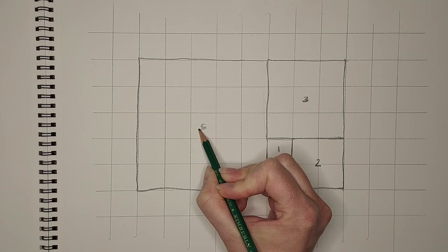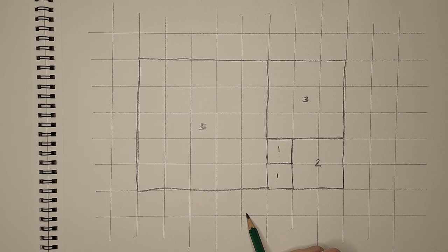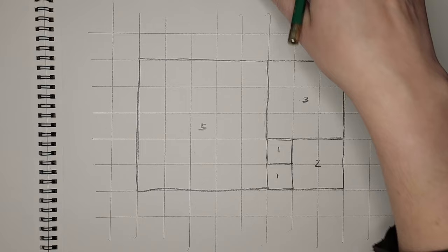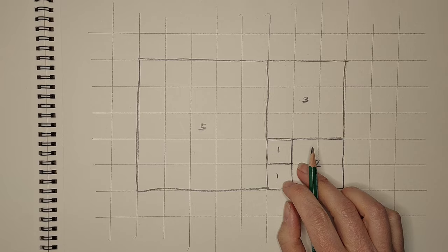The next square would be here. Going this way it would be eight. Then we'd have a 13 and it just 21 and it just keeps getting bigger. But I want to show you on this one real quick how you're going to do the spiral.